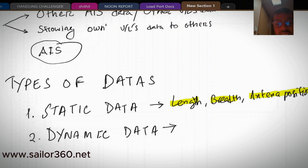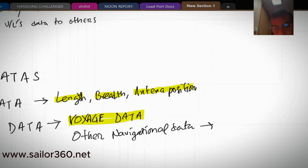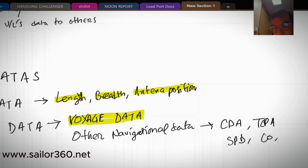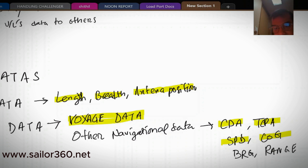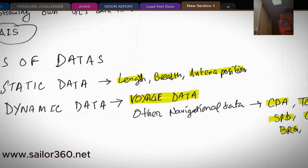Dynamic data has two types. One is voyage data, and another is other navigational data like CPA (Closest Point of Approach), TCPA (Time of Closest Point of Approach), speed of the ship, course over ground, bearing, and range.